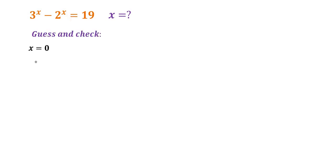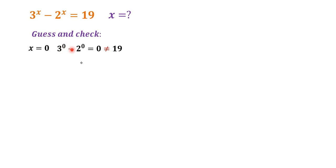We start from x is equal to 0 and go back to the original equation. We have 3 to the power of 0 minus 2 to the power of 0 is equal to 0, and it is not equal to 19, so it doesn't work for the equation.